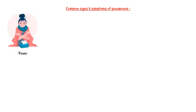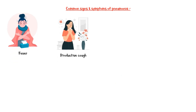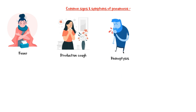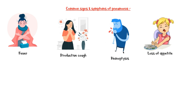Common signs and symptoms of pneumonia include the following: fever with or without chills and rigors, productive cough with white or purulent sputum, coughing up blood — also known as hemoptysis — and loss of appetite due to increased inflammatory mediators.